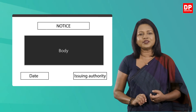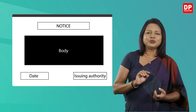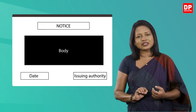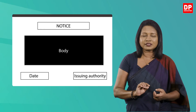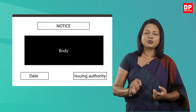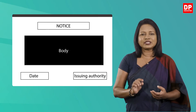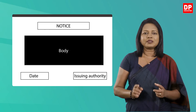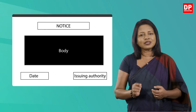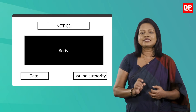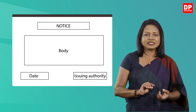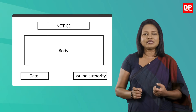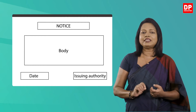Next, you have the body of the notice. Here you write details such as the subject of the event — that means what the event is. You can write about the date, time, duration, and the venue, meaning when and where you are going to have the event. As we discussed earlier, this information is written in simple formal language.